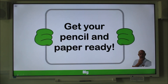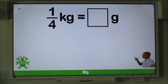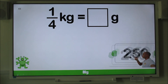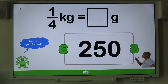Okay, pencil and paper ready — here comes question 5. Remember to explain your answer and give this one a go. Convert a quarter of a kilogram into grams. Remember to pause the clip. Did you make it 250? Well done. Did you remember that half of a kilogram is 500, and a quarter is half of a half? So half of 500 is 250.